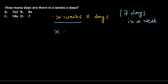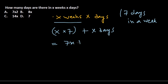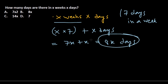So x weeks means x multiplied by seven, plus x days. The total number of days will be 7x plus x, which equals 8x days. The answer is option B: 8x days.